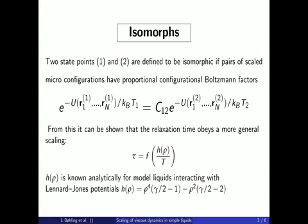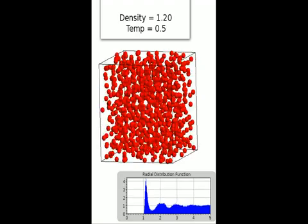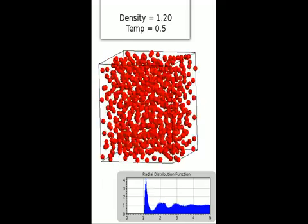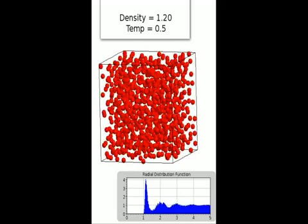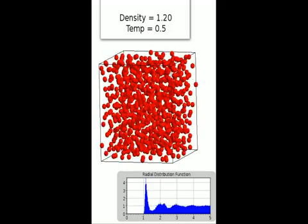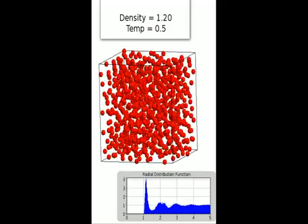We will illustrate this by showing simulations of three state points where two of them are isomorphic and the third is not. The first state point is at a low temperature and low density and we visualize the position of the atoms as red balls and probe the structure instantaneously by calculating the radial distribution function seen in the lower panel.